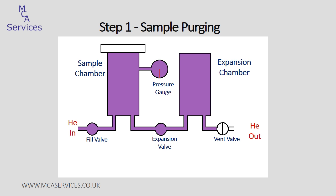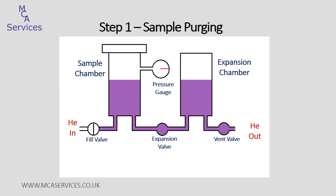Once we've placed our sample in the AccuPyc, the first step is to purge the sample and the instrument with helium to ensure both the sample and system are cleaned of any other gases that would interfere with measurement accuracy. To purge, the fill and expansion valves are opened and helium flows into both chambers to a pressure above atmospheric — typically around 20 psig. The fill valve is then closed, the vent valve is opened, and helium flows out to return the system to atmospheric pressure. This purge cycle is repeated, typically between five and ten times.